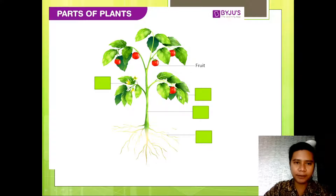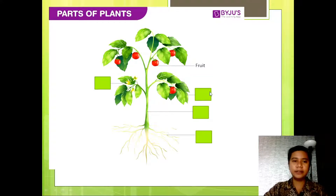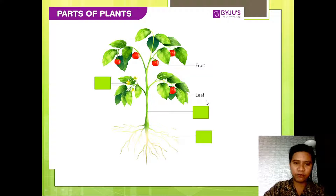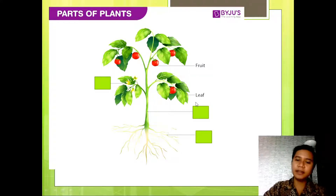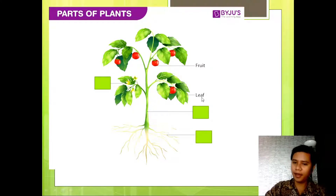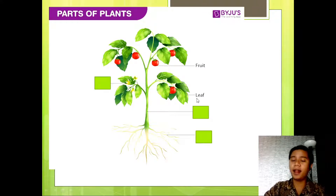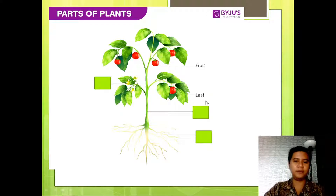Next — what part of the plant is this? The green one. This part of the plant is what we call leaf. Can you spell leaf? L-E-A-F. Leaf. Very good.